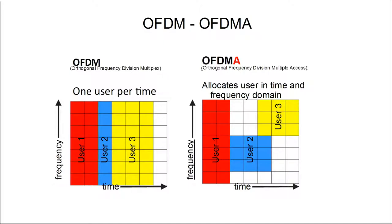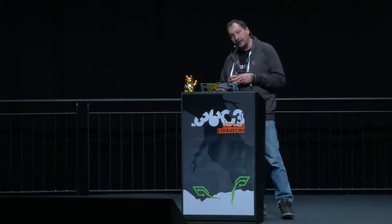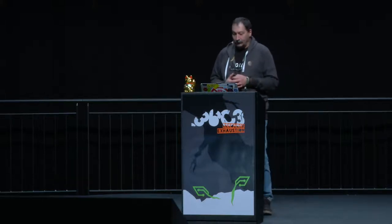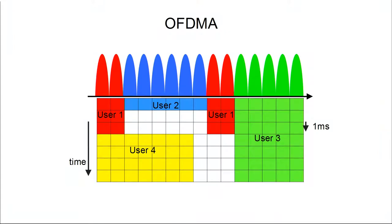OFDM has been around for a long time — it's used in Bluetooth or Wi-Fi. However, in OFDM all sub-carriers are used for one end device, and only when that device has been served is the next device served. OFDMA is Orthogonal Frequency Division Multiple Access. Guards and spaces are introduced and different clients are served, but it's a little harder to calculate and process. With OFDMA, data is shared across sub-carriers among multiple clients.